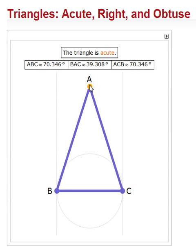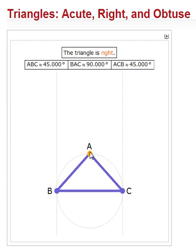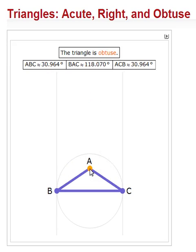And here we have an acute. I can't change the length of B and C on this program. So: acute, a right-angle triangle, and obtuse.